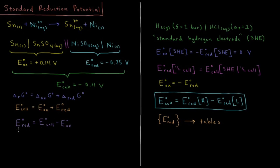To get these standard reduction potentials, we use something called the standard hydrogen electrode, or SHE for short. We take H₂ gas at a fugacity of 1 bar — the standard state for hydrogen gas — at our anode, and it gets oxidized to form H+ ions, making aqueous HCl at a mean ionic activity of 1, so both species are at an activity of 1. That is the standard hydrogen electrode placed at our anode.